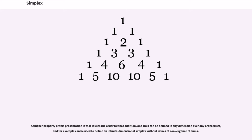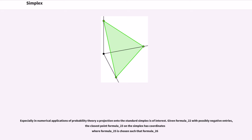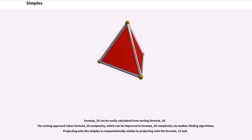A further property of this presentation is that it uses the order but not addition, and thus can be defined in any dimension over any ordered set, and for example can be used to define an infinite dimensional simplex without issues of convergence of sums. Especially in numerical applications of probability theory, projection onto the standard simplex is of interest. Given a vector with possibly negative entries, the closest point on the simplex has coordinates where lambda is chosen such that the sum equals one. Lambda can be easily calculated from sorting. The sorting approach takes O(n log n) complexity, which can be improved to O(n) complexity via median finding algorithms.